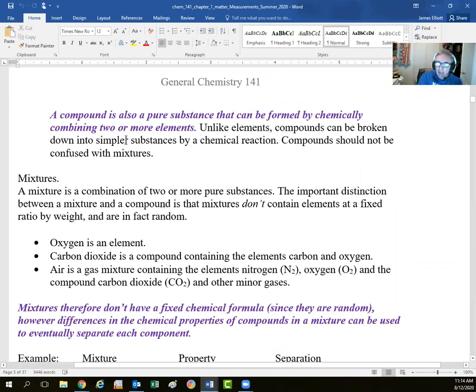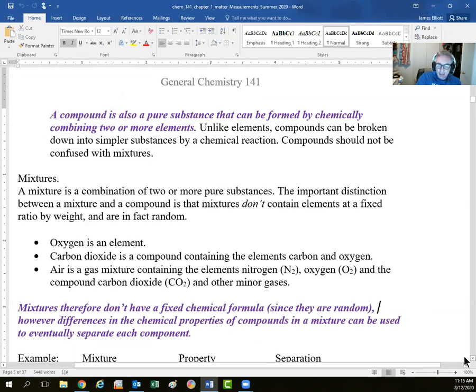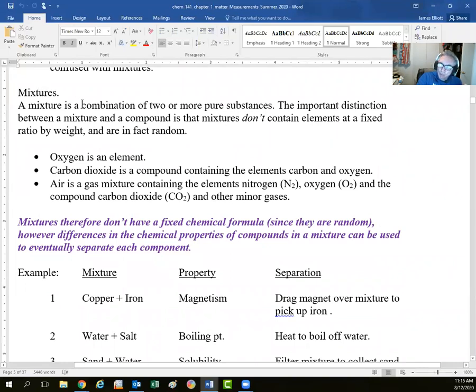We've got our elements which are the simplest form of matter that can't normally be broken down, certainly can't be broken down by chemical reaction. But we combine the elements to make these compounds. We can have a pure compound made up of elements, but it can be broken down by chemical reactions. However, sometimes the elements combine just to give a mixture. We haven't formed a new chemical compound, we've just got a bunch of chemicals mixing together. For example, oxygen is an element. We know it's an element because it's part of the periodic table.